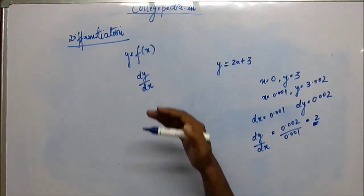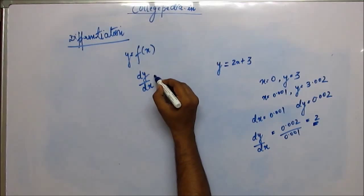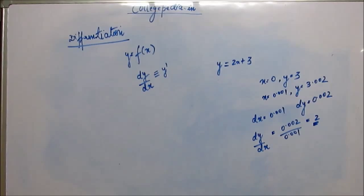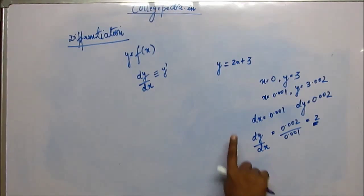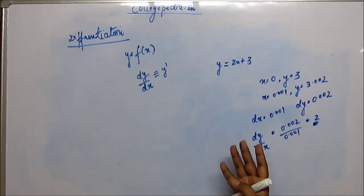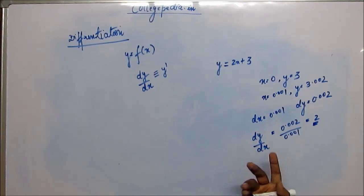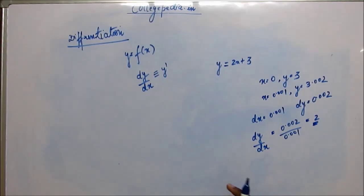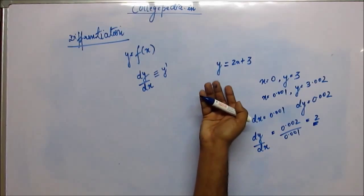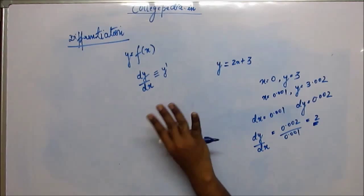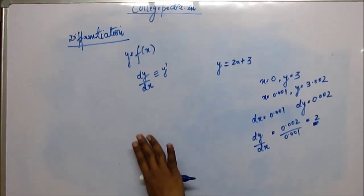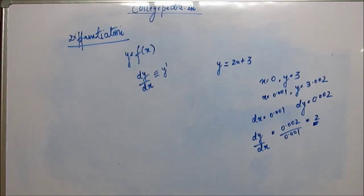dy/dx is also called the derivative of y with respect to x, and it is also represented with the symbol y-dash. y-dash means dy/dx, assuming y is dependent on x. If y is dependent on z, then y-dash would mean dy/dz. If y is dependent on an independent variable p, then y-dash would mean dy/dp — whatever variable it is dependent on. Here, since y is dependent on x, y-dash means dy/dx.